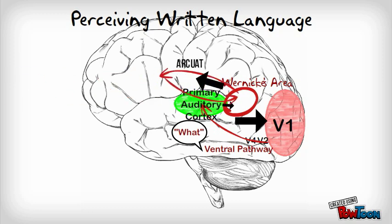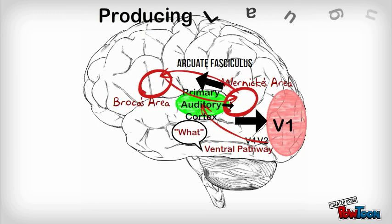When reading words, you say them to yourself in your head. This is when they are transferred from the what pathway to the auditory cortex. The words then go through the same steps that spoken words do.